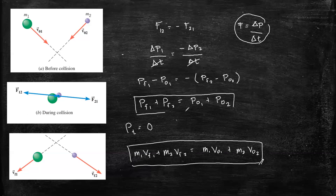By the word conservation, we mean there is a constant linear momentum. The total linear momentum of an isolated system remains constant. An isolated system is one in which the vector sum of the average external forces acting on the system is always equal to zero.